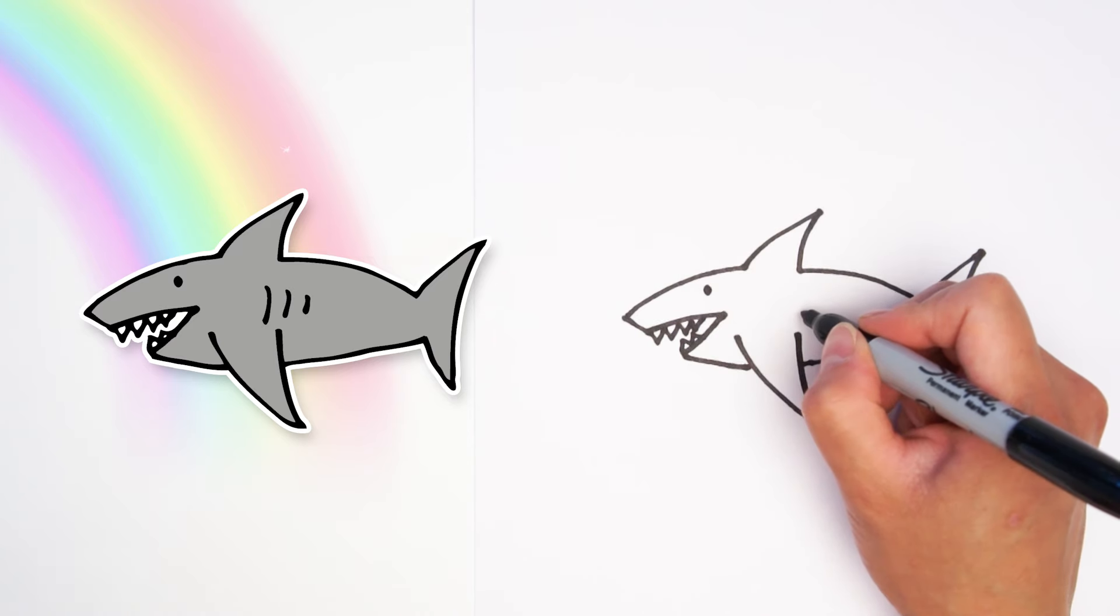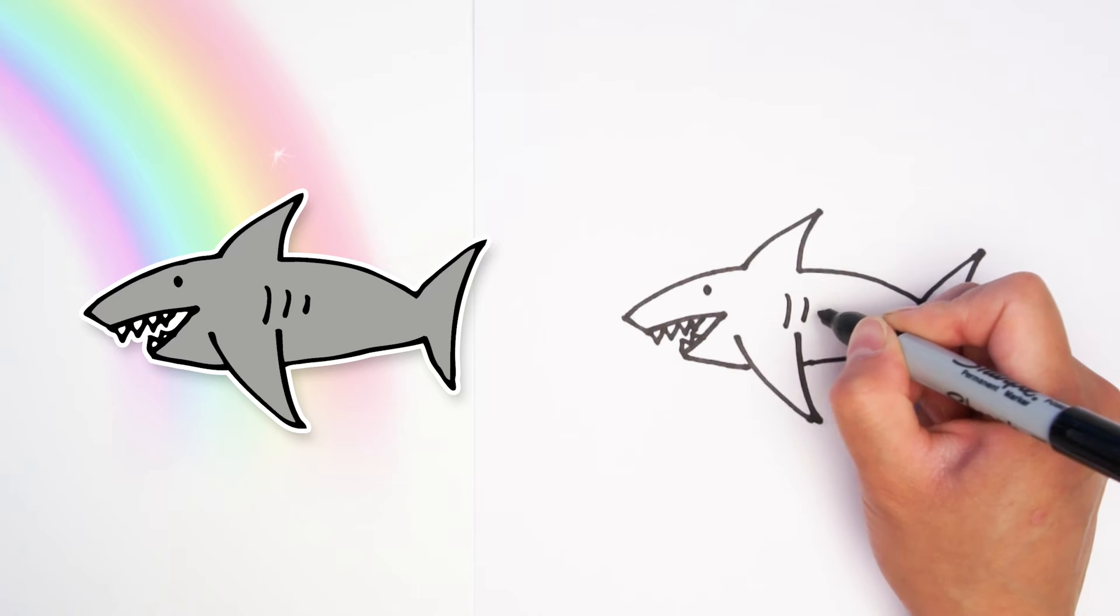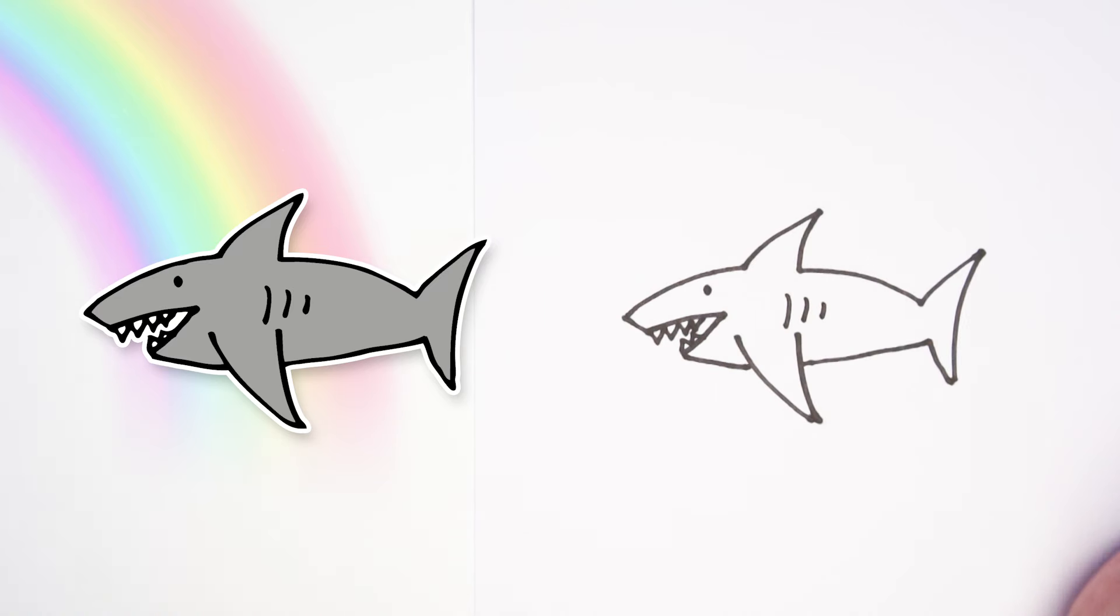Alright, last little detail. Let's add some gills, just some lines going up and down in the middle of the body. And there we go. We have one mean looking shark ready to attack its victims.